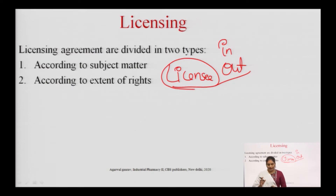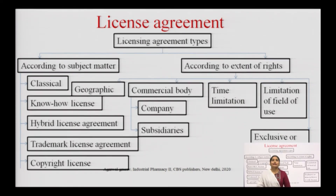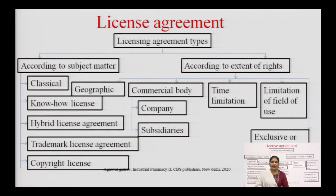License agreements are divided into two types: first, according to the subject matter; and second, according to the extent of rights, as shown in the flowchart. According to the subject matter, licensing is divided into five types: classical, know-how license, hybrid license agreement, trademark license agreement, and copyright license. According to the extent of rights, it is divided into five types: geographical, commercial bodies, time limitation, limitation of field of use, and exclusivity.